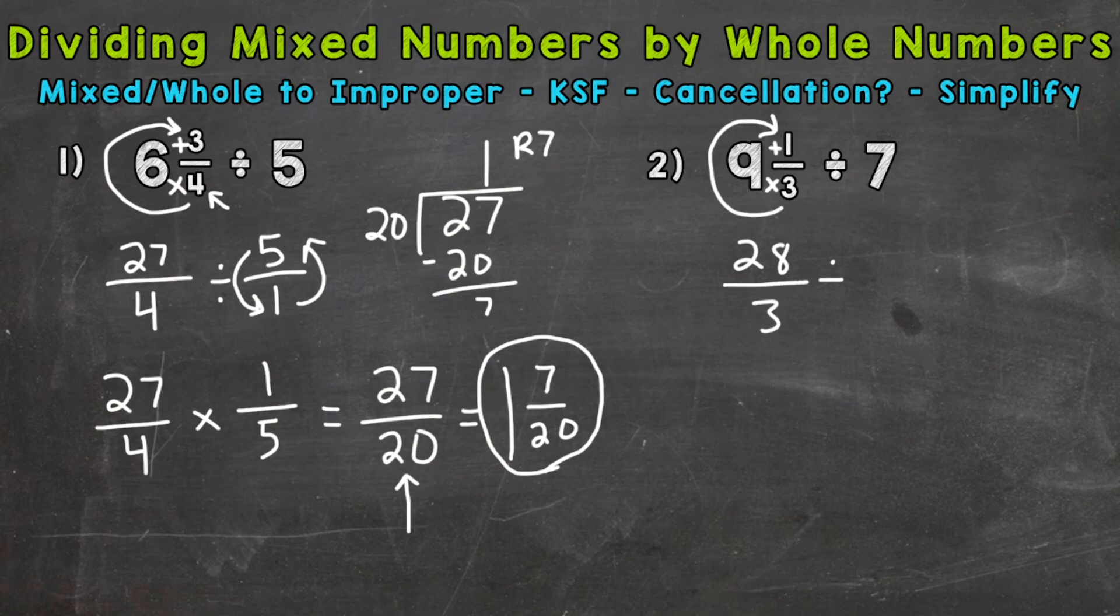Keep our denominator of 3 the same. Bring our division sign down here. And then remember for any whole number, we can just put it over 1 to put it into fractional form. Now we're ready for the dividing fractions steps. KSF.